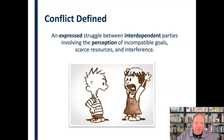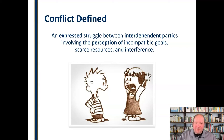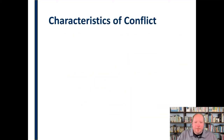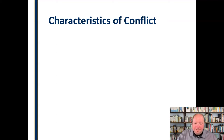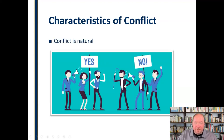Either way, those are the types of things that lead to conflict. So conflict is an expressed struggle between interdependent parties involving the perception of incompatible goals, scarce resources, and interference — that's our foundation. The first thing we need to understand is that conflict is natural in a relationship. It's something that's going to occur in every relationship that we have, over all time. Every relationship is going to have conflict. It's not a matter of if you have conflict.